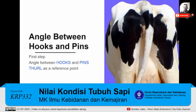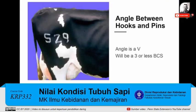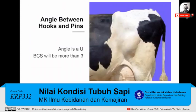The first decision you make will divide cows into two groups: those with a body condition score less than or equal to 3, and those with a score greater than 3. From the side view, we evaluate the angle between the hooks and pins using the thurl as a reference point. If the angle between the hooks and pins forms a V, the cow will have a body condition score of 3 or less. If the angle forms a U, the cow's body condition score will be more than 3.